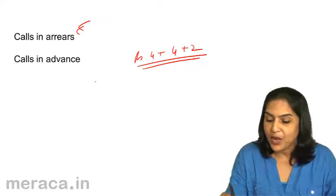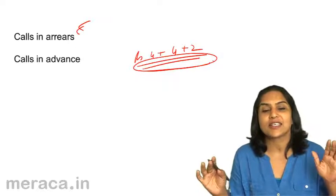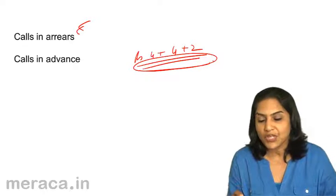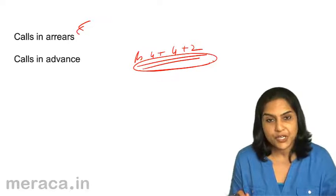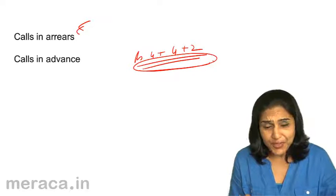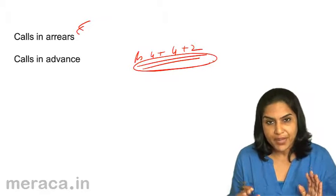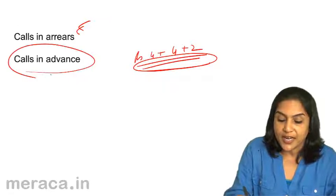He says he is traveling, he does not want to wait for the installments, he is ready to pay the full 10 rupees per share on his investment. If that be the case, the company may receive this amount, but this amount is called calls in advance.